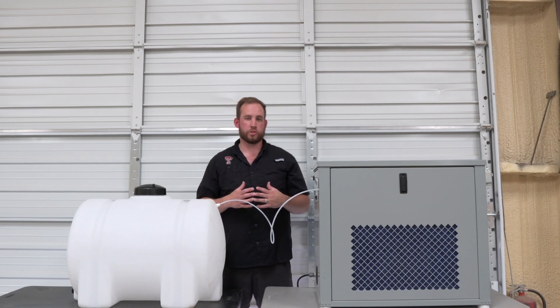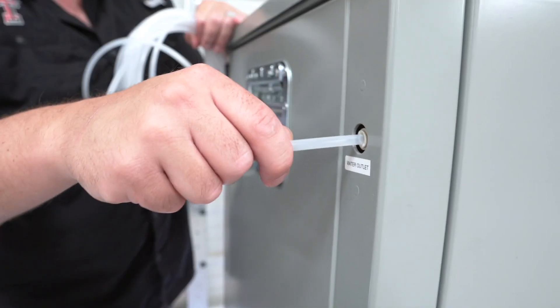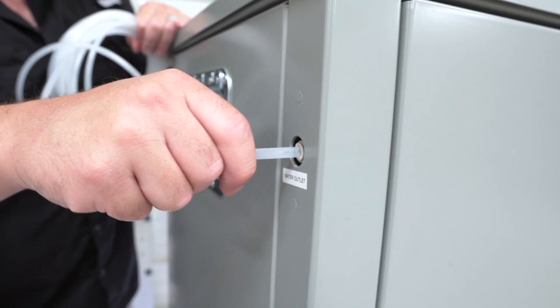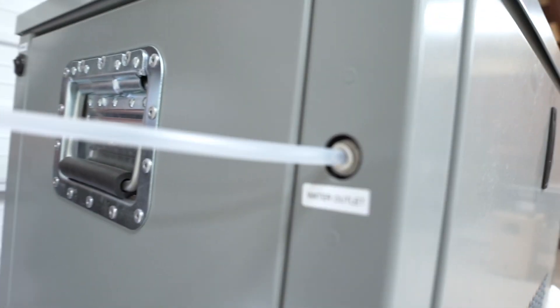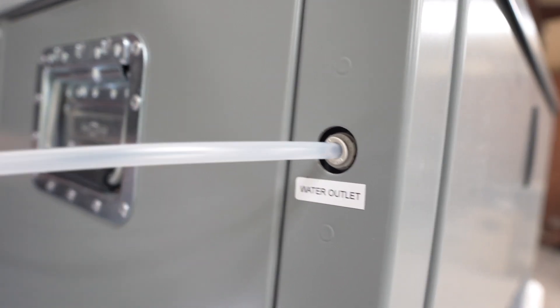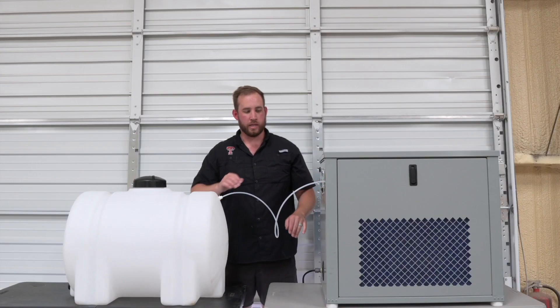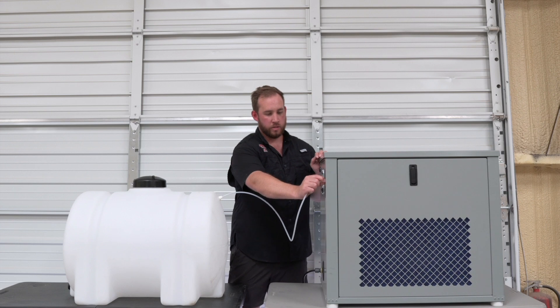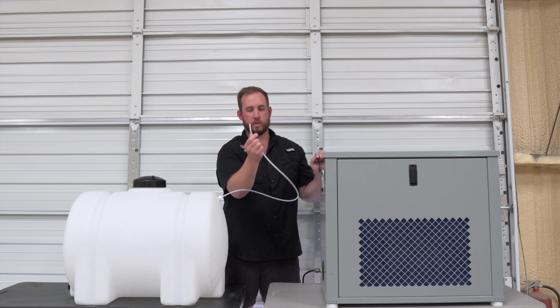So this is what we call a push-to-connect fitting, meaning that to get it in and out, you simply push in, or you push in and pull out. Very, very simple, and those are utilized on both the machine and the actual tank. So as I said, you just push in, and the tubing comes out.